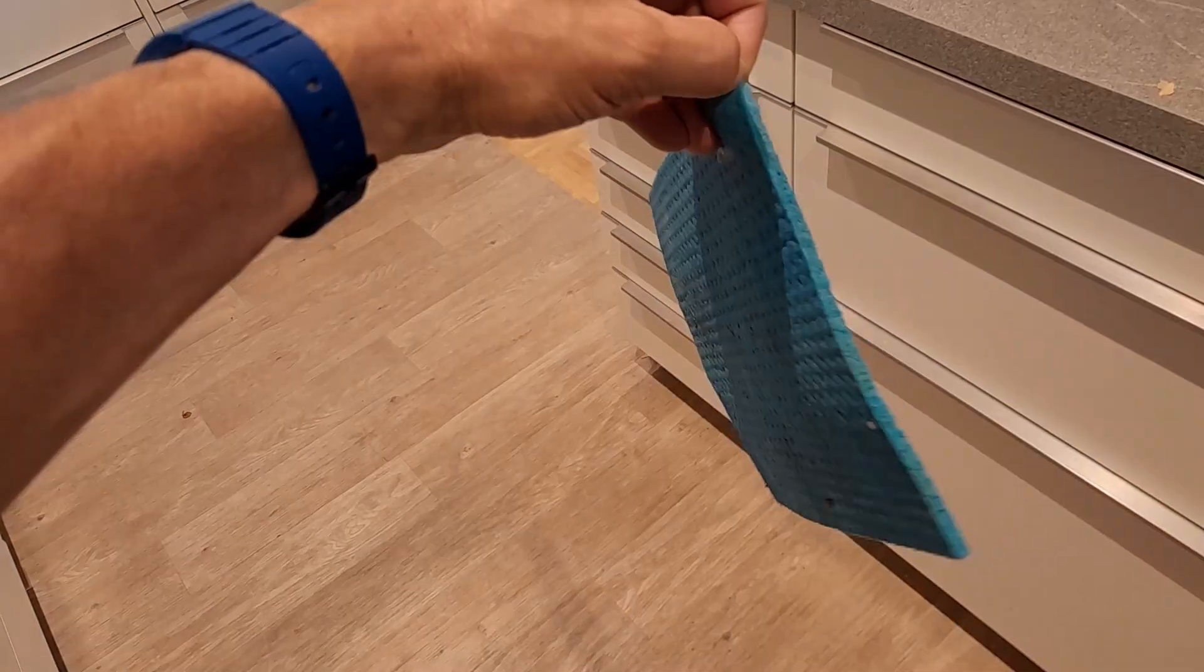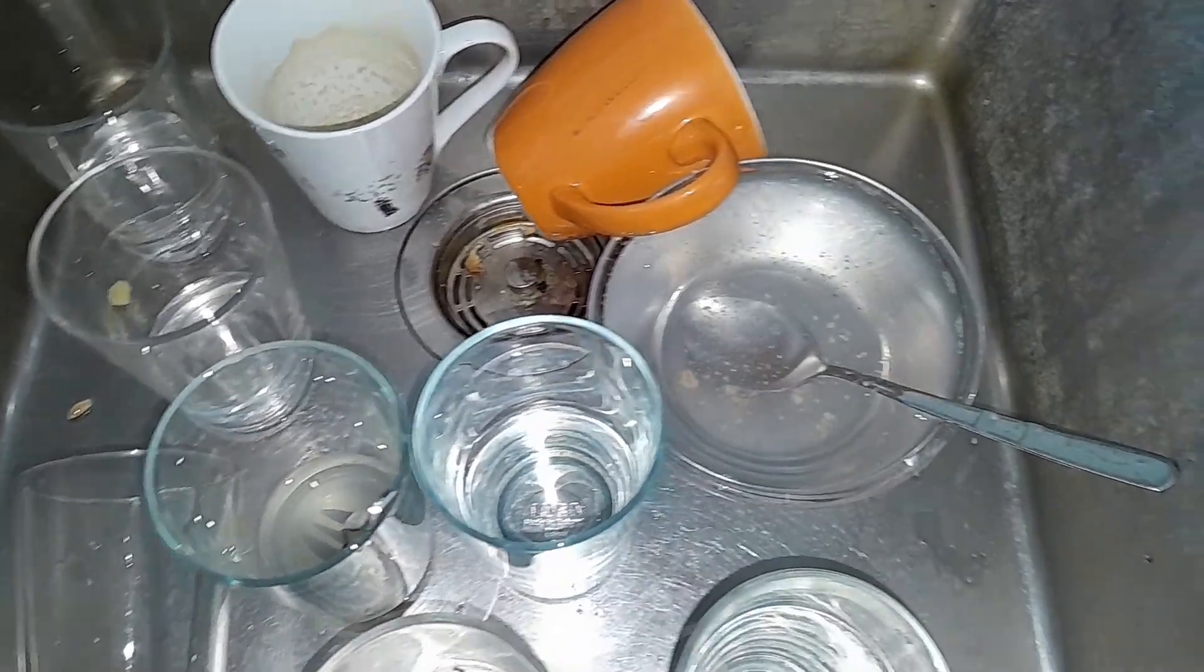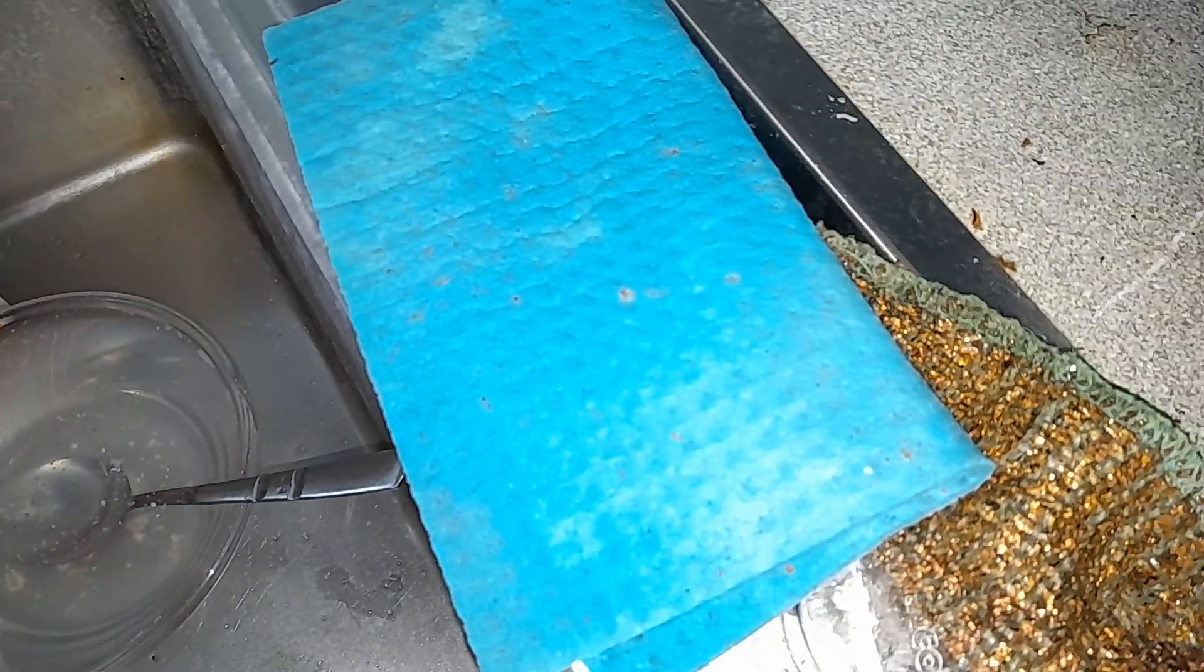Now the dirtiest thing in your home isn't in the toilet. It can actually be found in your kitchen because the sponge that you use for cleaning your dishes and the tables is crawling with more bacteria than almost anything else at home.